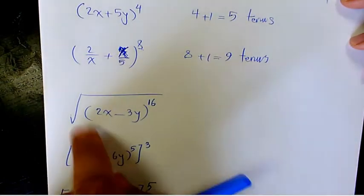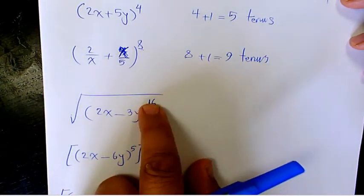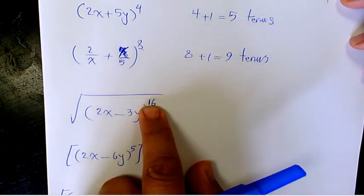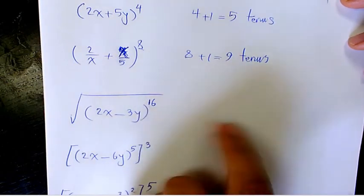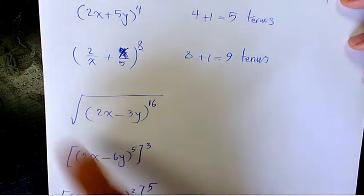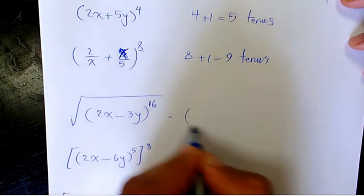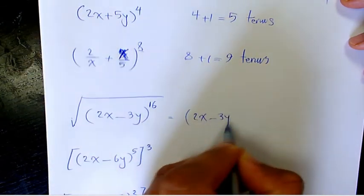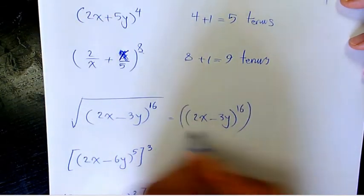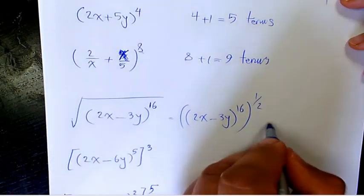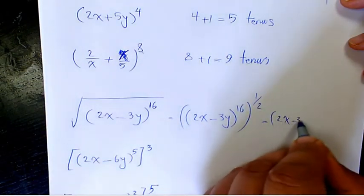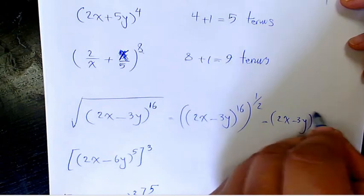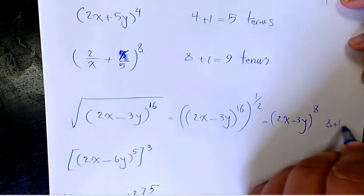Next one: square root of (2x-3y)^16. In the beginning you might say it's 16+1, so it's 17. But here we have a square root. When you have a square root, it's going to be (2x-3y)^(16/2) because square root is the same as 1/2. 2x-3y: 16 times 1/2 is going to be 8, so 8+1 is going to be 9 terms. So we have 9 terms in total.